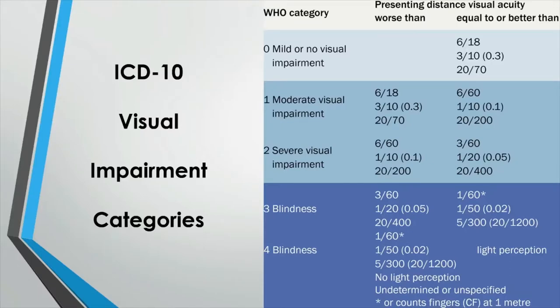This is the table of visual impairment categories based on the International Classification of Disease, 10th revision by WHO. The WHO's four levels of visual function are categorized and measured as follows. Category zero is mild or no visual impairment, where vision is equal to or better than 6/18 using a Snellen fraction. Category one is moderate visual impairment, where vision is worse than 6/18 but equal to or better than 6/60.